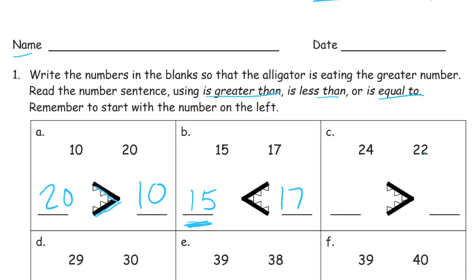So it all just matters which number comes on the left. So here we've got 24 and 22. 24 is greater, so it goes over here. And 22 is smaller, so it goes over there. 24 is greater than 22.